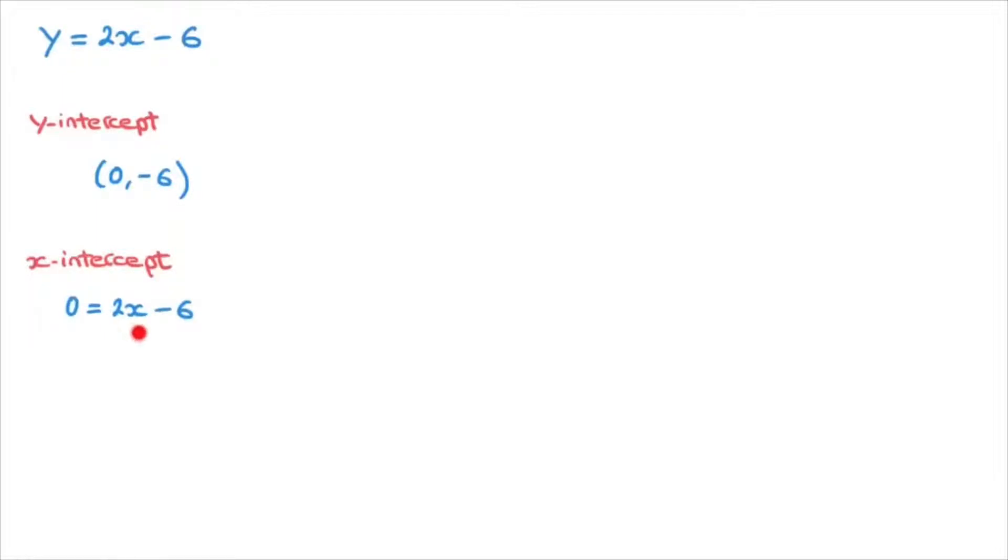And now we solve this equation for x. So adding 6 to each side of this equation, we find 6 equals 2x. And we now divide both sides of the equation by 2. That's 6 over 2 equals x. Now 6 divided by 2 is 3, so 3 equals x.